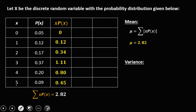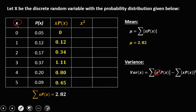To solve for the variance, we need the summation of x² times P(x), so we first find x², which is x squared. So: 0 squared is 0; 1 squared is 1; 2 squared is 4; 3 squared is 9; 4 squared is 16; and 5 squared is 25.